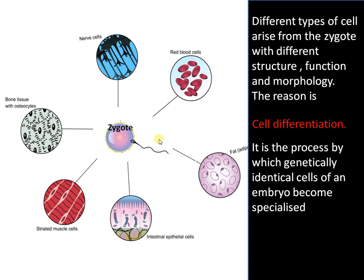Cell differentiation is the process by which genetically identical cells of an embryo become specialized to perform specific functions.